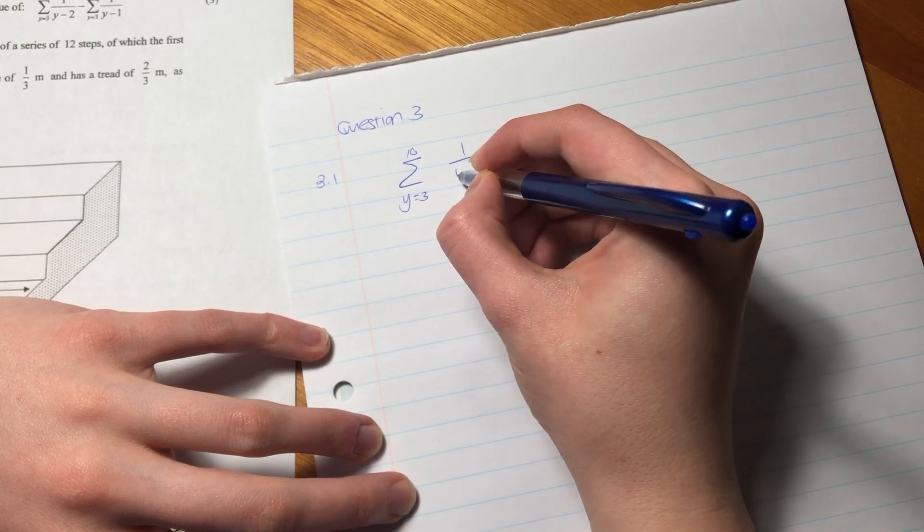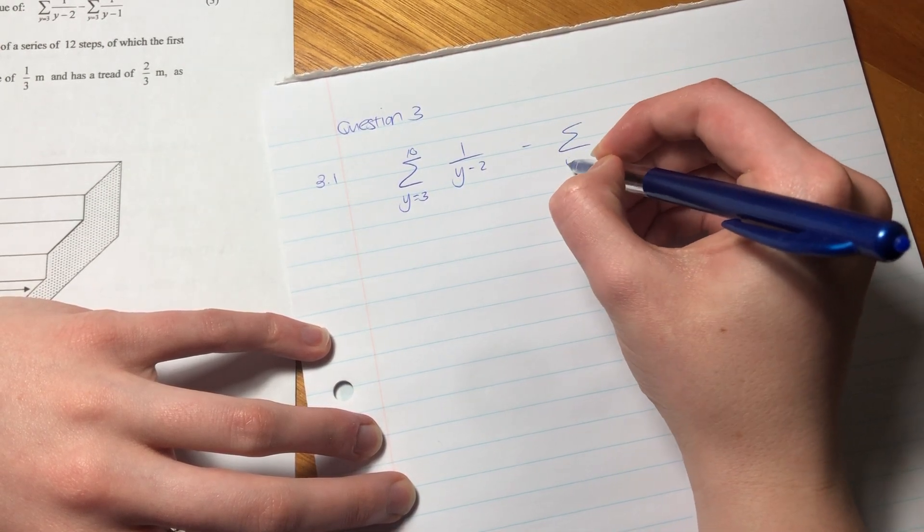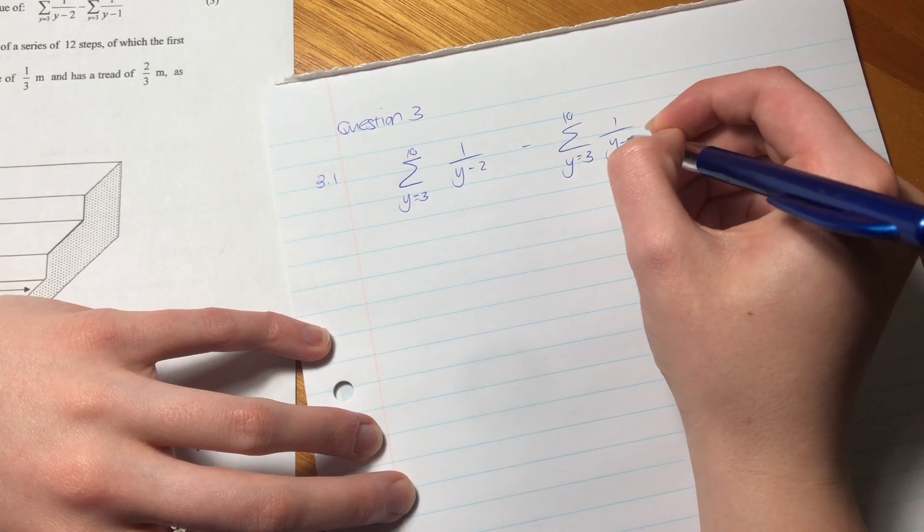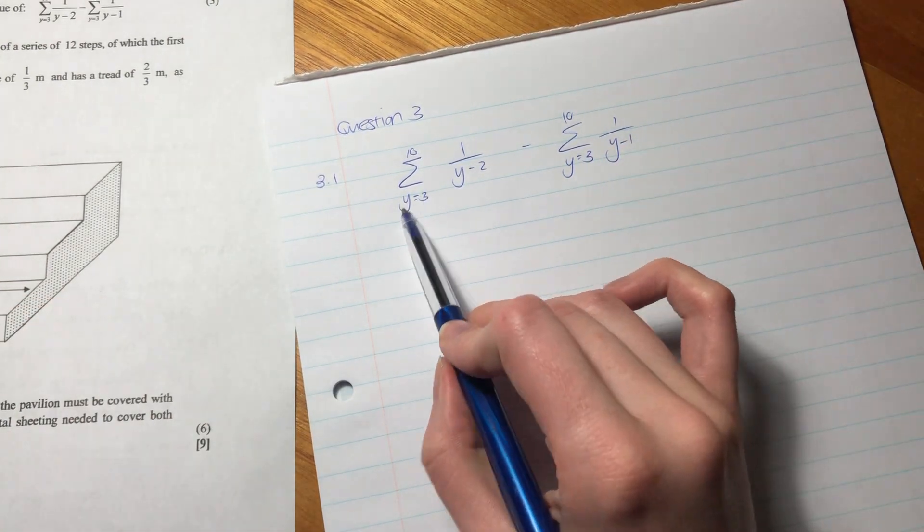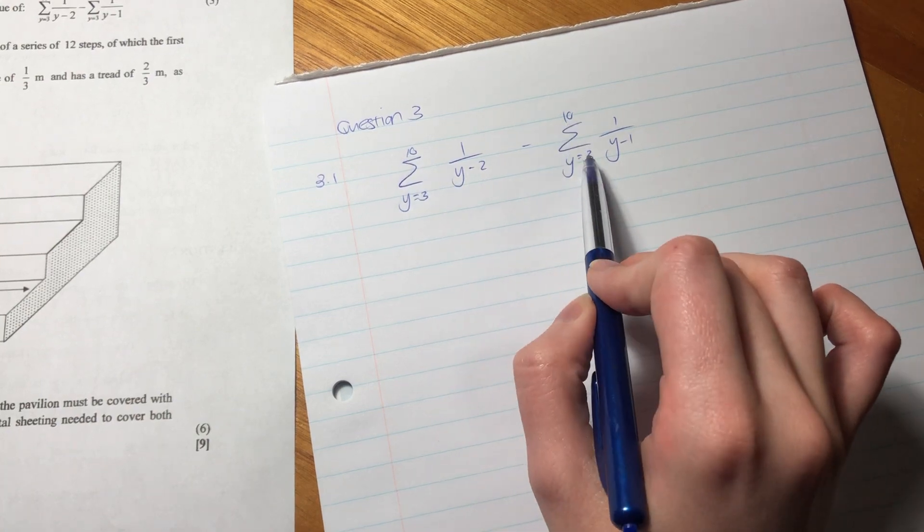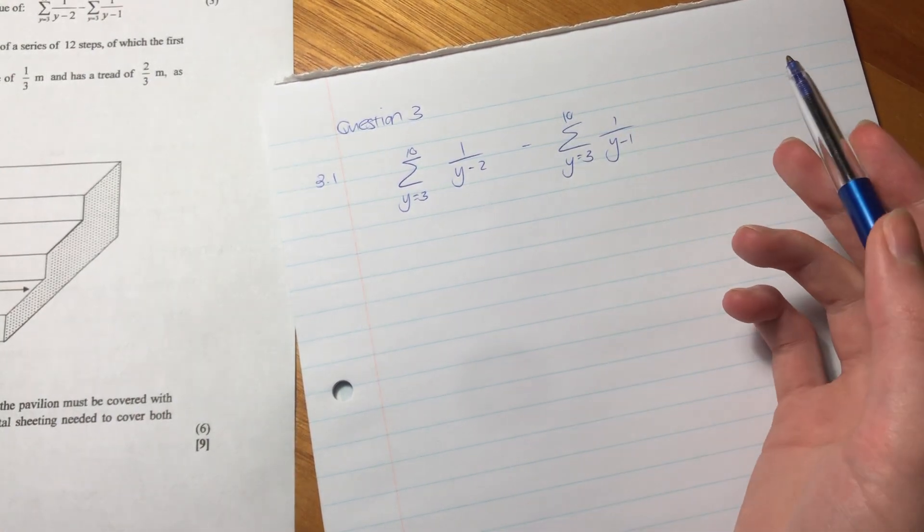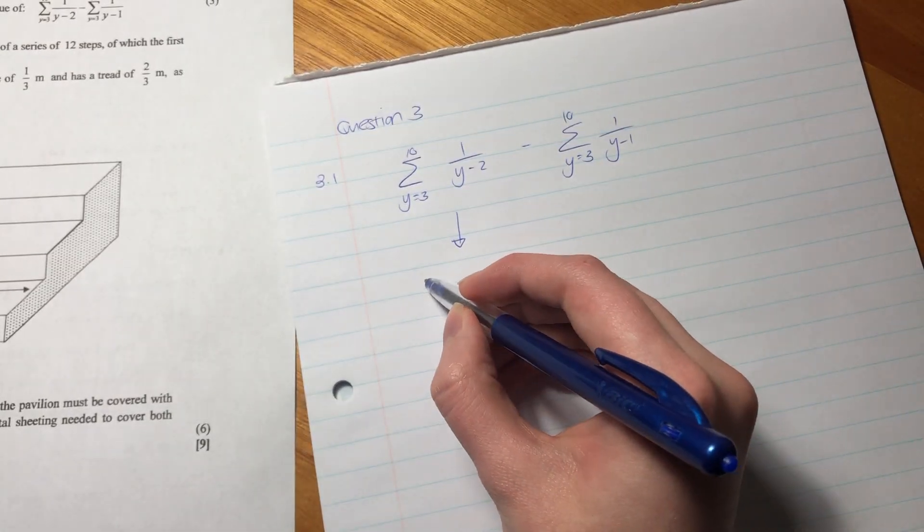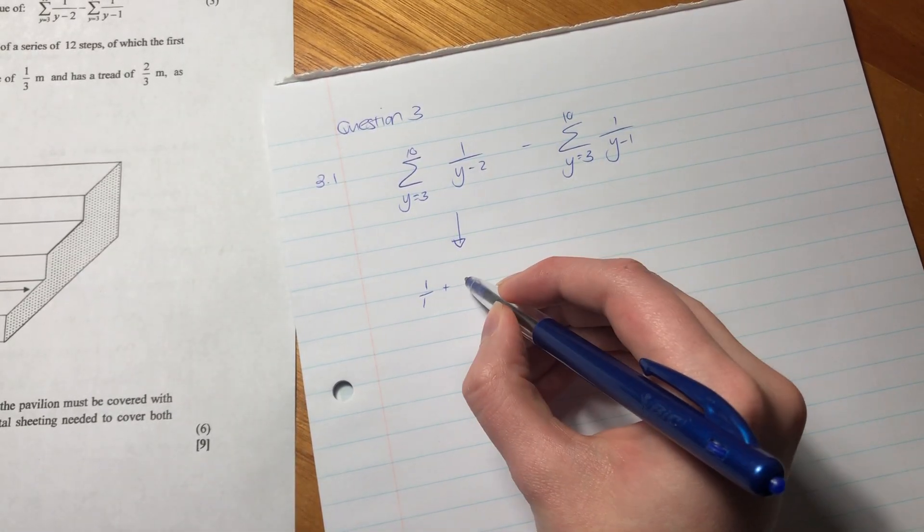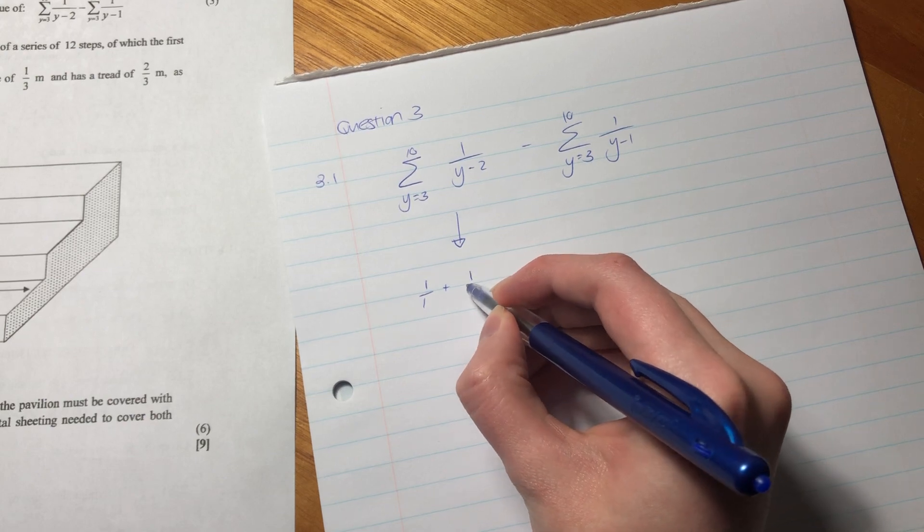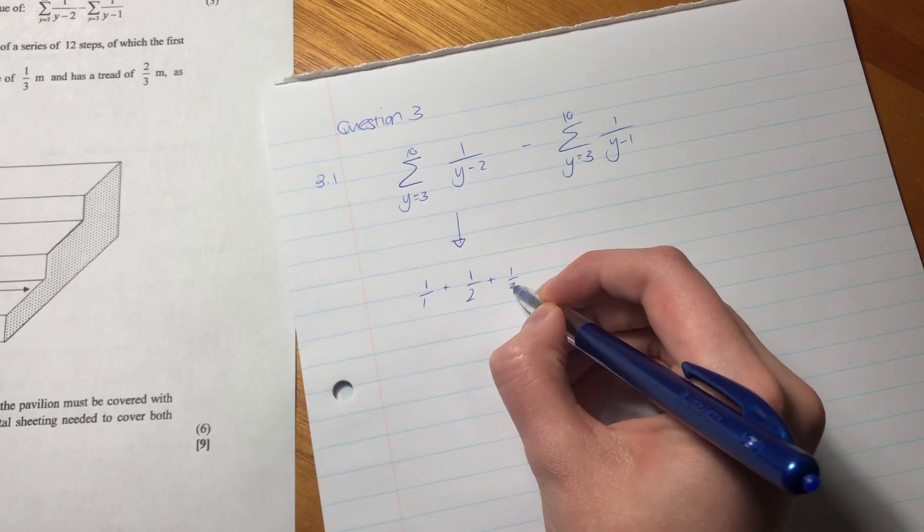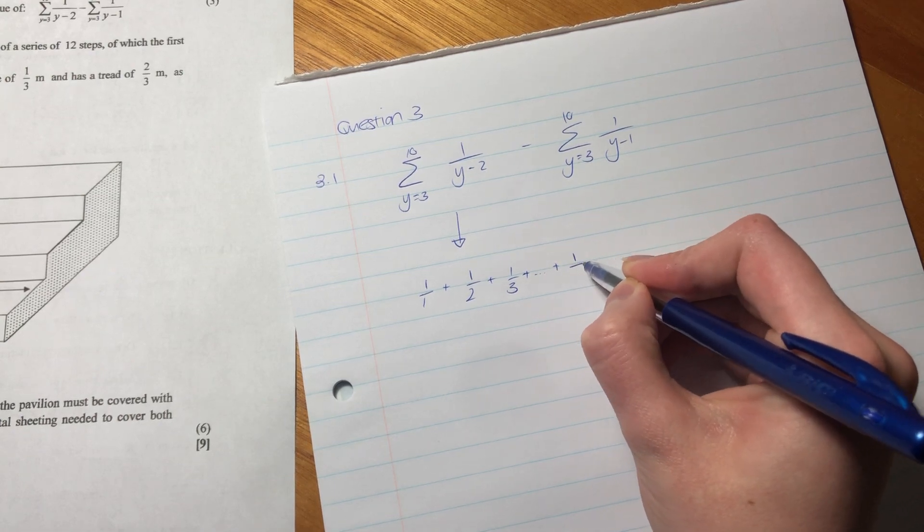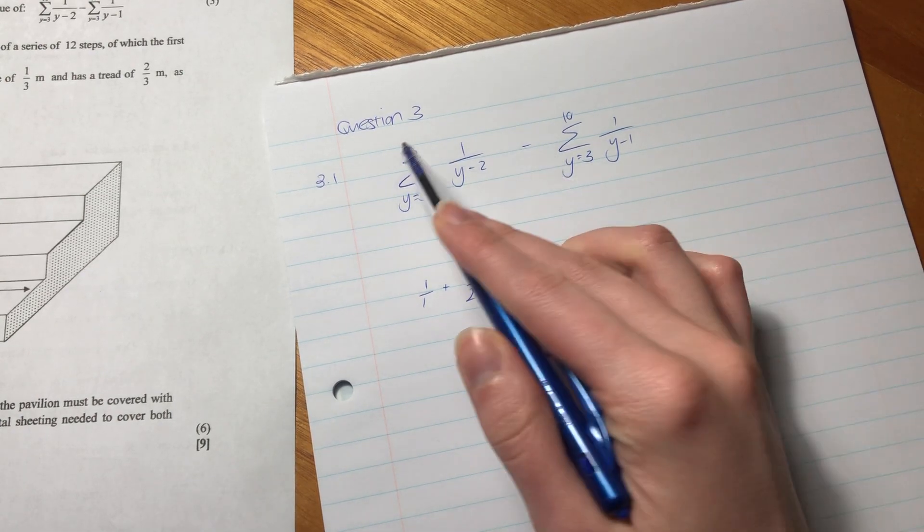We have the sum from y=3 to 10 of 1/(y-2) minus the sum of 1/y. Both sums are over the same interval. Let's write out the first couple of terms: 1/1 + 1/2 + 1/3, the whole way up to 1/8—that's when y equals 10.